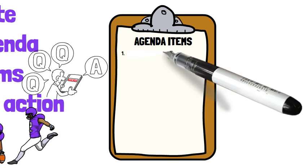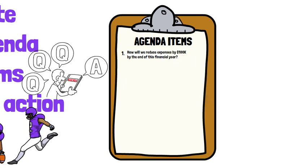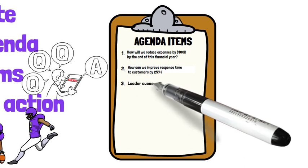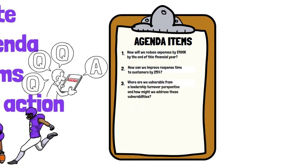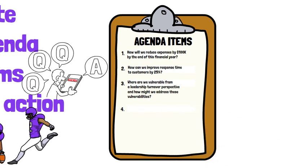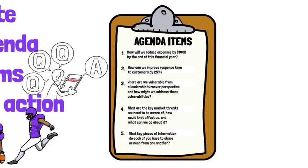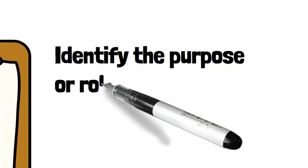For example, instead of the topic 'budget issues,' ask: 'How will we reduce our expenses by $100K by the end of this financial year?' Instead of 'customer process improvement,' ask: 'How can we improve response time to customers by 25 percent?' For leader succession, ask: 'Where are we vulnerable from a leadership turnover perspective and how might we address these vulnerabilities?' For strategic planning, ask: 'What is the key market threat we need to be aware of, how could it affect us, and what can we do about it?' The topics should be thought-provoking yet not so far-fetched that participants end up feeling discouraged.